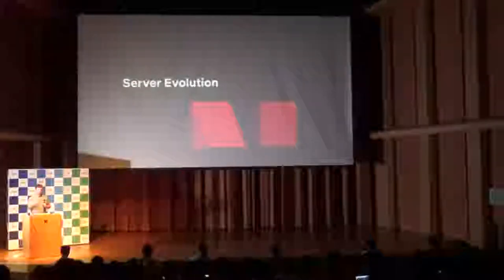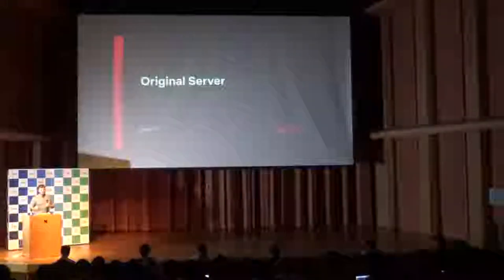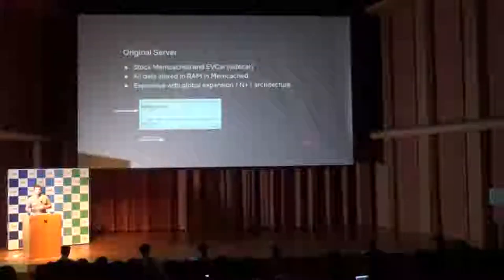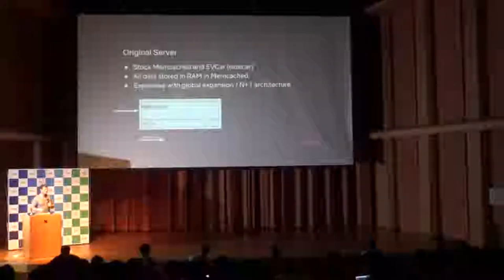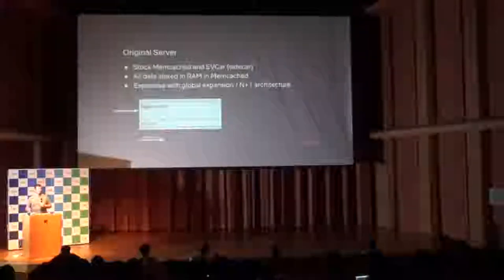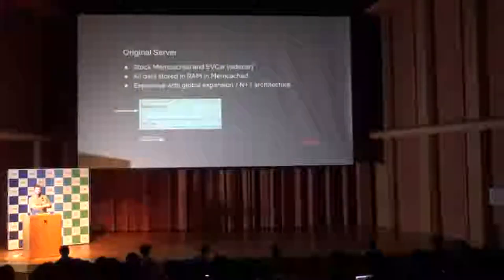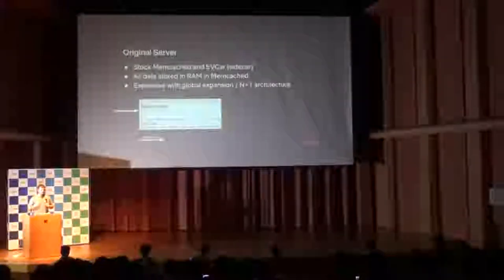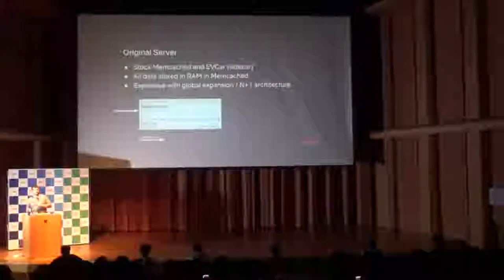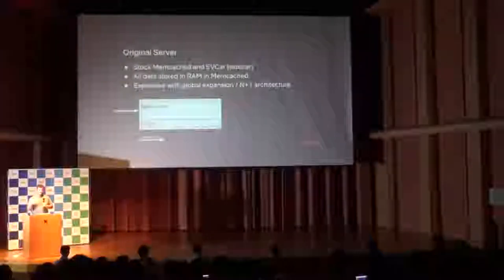Our original server, which I call server V1, was relatively simple. It worked for us for about six or seven years — just plain Memcached with our sidecar process called EVcar, all data stored in RAM. But at the end of 2015 and beginning of 2016, we had two major changes: we switched from an island model to a global model with all data everywhere, and we turned on access to 190 countries at once, which rapidly increased subscriber count. This made the system very expensive — RAM is fast but costs a lot of money to store a lot of data.